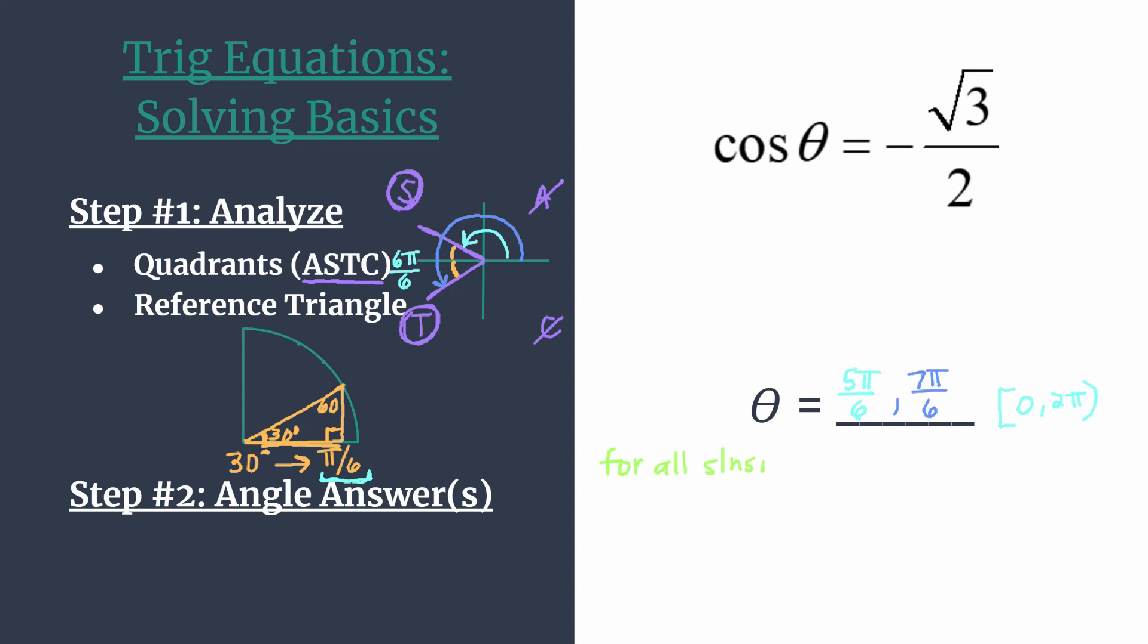And when we think about that, remember about coterminal angles. So 5 pi over 6 has infinitely many coterminal angles, and they just share the same terminal side. That's all coterminal means. So we want something to express that 5 pi over 6 and all its coterminal angles are solutions. And the same thing goes for 7 pi over 6. So here's how we're going to do this.